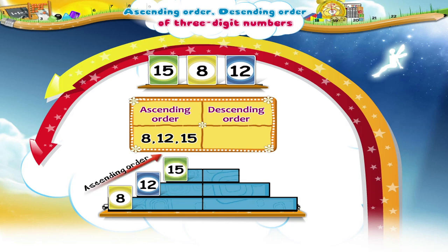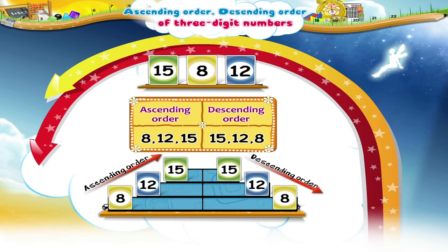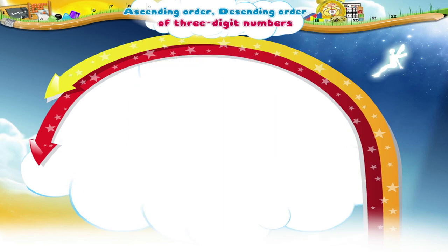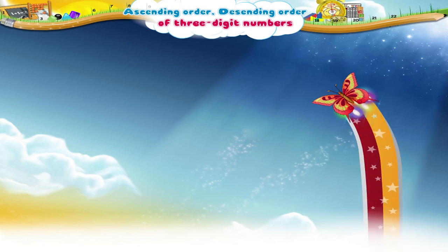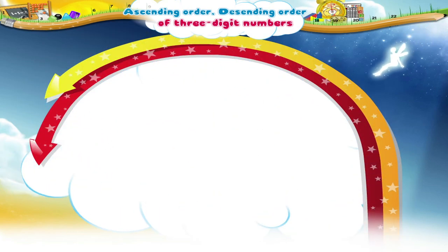Now tell me the descending order, that is, from the biggest to the smallest number. The descending order is 15, 12 and 8. Good!